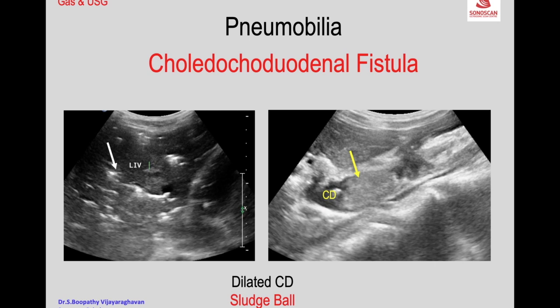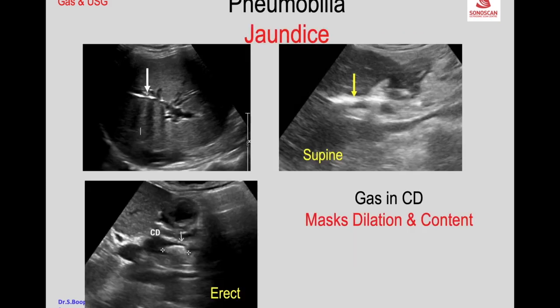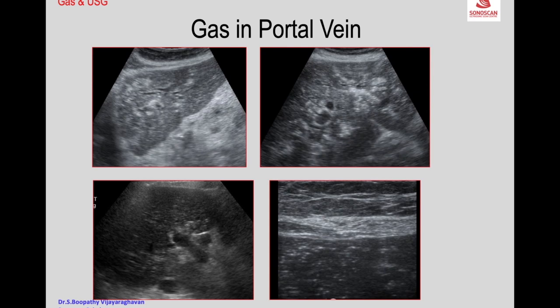Gallstone ileus is diagnosed as a spontaneous cholecystoduodenal fistula. Because of the duodenal fistula, sludge forms within the common duct. When the biliary tree is obstructed and contains gas, the gas will go into the non-dependent echogenic lesions within the liver. When you see the portal drain you may see streaming of gas bubbles.